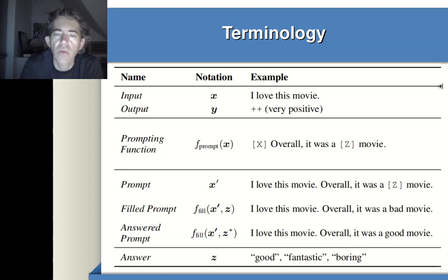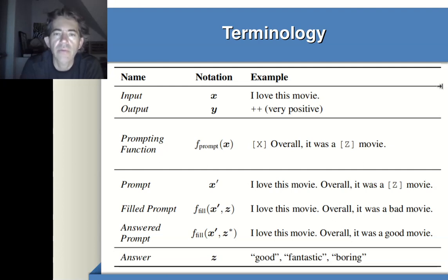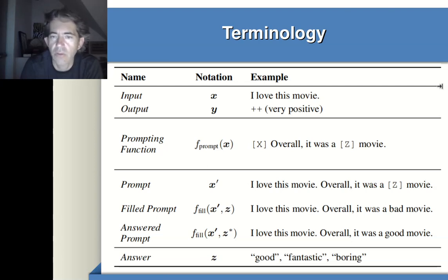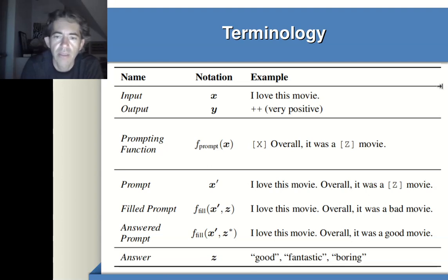The answered prompt is the one we expect — the one in our test dataset. The answer is the particular token the large language model provides. We then have to do mapping: project the answer into the domain of labels. For instance, we can verbalize terms like 'good,' 'fantastic,' 'cool,' 'wonderful' as very positive; 'okay,' 'possible' as positive; 'meh' as neutral; and 'boring' as negative, and so on.